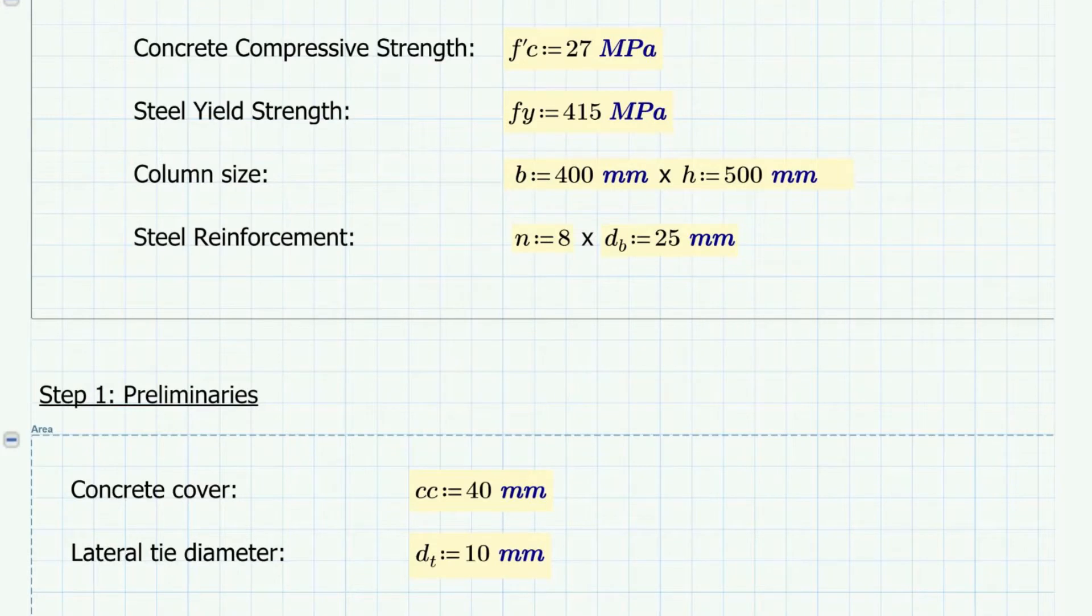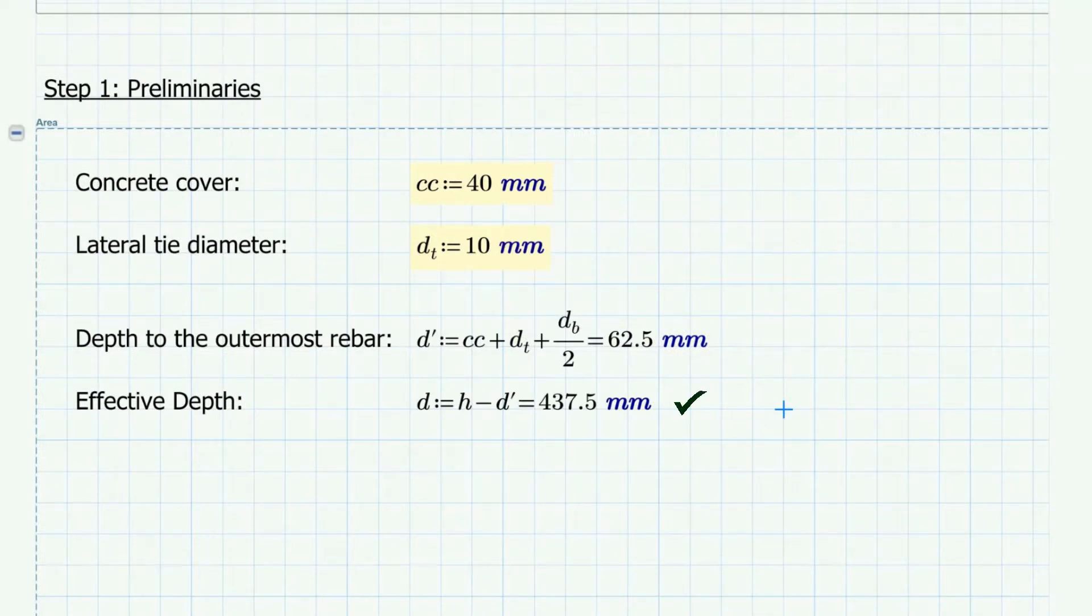Since concrete cover is not given, we will assume 40 mm cover. This is the minimum cover requirement for columns as per ACI code. For the lateral ties, we will assume 10 mm diameter tie. ACI code specifies a minimum 10 mm diameter tie for columns with main reinforcement not greater than 32 mm diameter.